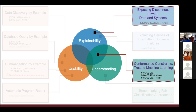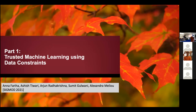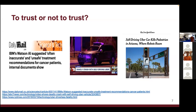Part one is about trusted machine learning using data constraints — a joint work with researchers from Microsoft and my advisor Alexandra. We are increasingly shifting toward data-driven prediction and using these models everywhere, but we need to be cautious about when to trust these predictions. This becomes critical when high-stakes decisions are made, such as in self-driving cars or medical treatment, where a slight mistake can cause fatalities.